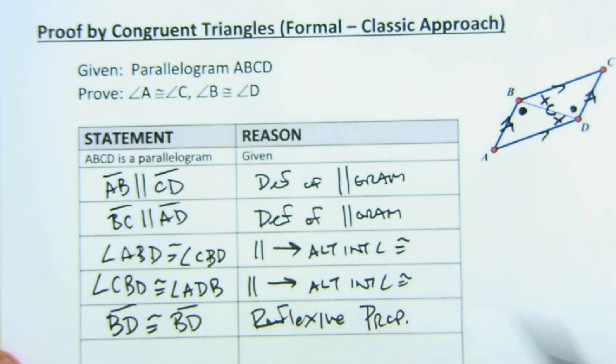And then I now can say triangle ABD is indeed congruent to triangle CDB, and I would use angle-side-angle. Once you've established they're congruent, then we can say...